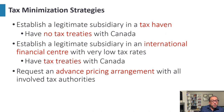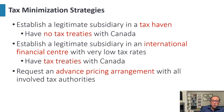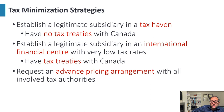Tax minimization strategies include: establishing a legitimate subsidiary in a tax haven that has no tax treaty with Canada; establishing a legitimate subsidiary in an international financial center where tax rates are low and there is a tax treaty with Canada; and requesting an advanced pricing arrangement with all involved tax authorities. If doing business at different locations, all tax authorities of all locations must be involved.